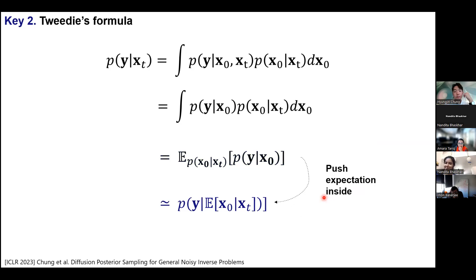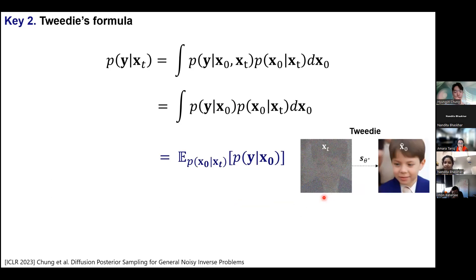Quick question: you said that y given x is modeled as Gaussian — is that a strong assumption? In most imaging cases, including MRI, the measurements are typically not too noisy. The noise will not be exactly Gaussian, but it can be sufficiently well approximated with Gaussian noise, so it's pretty much Gaussian in many cases.